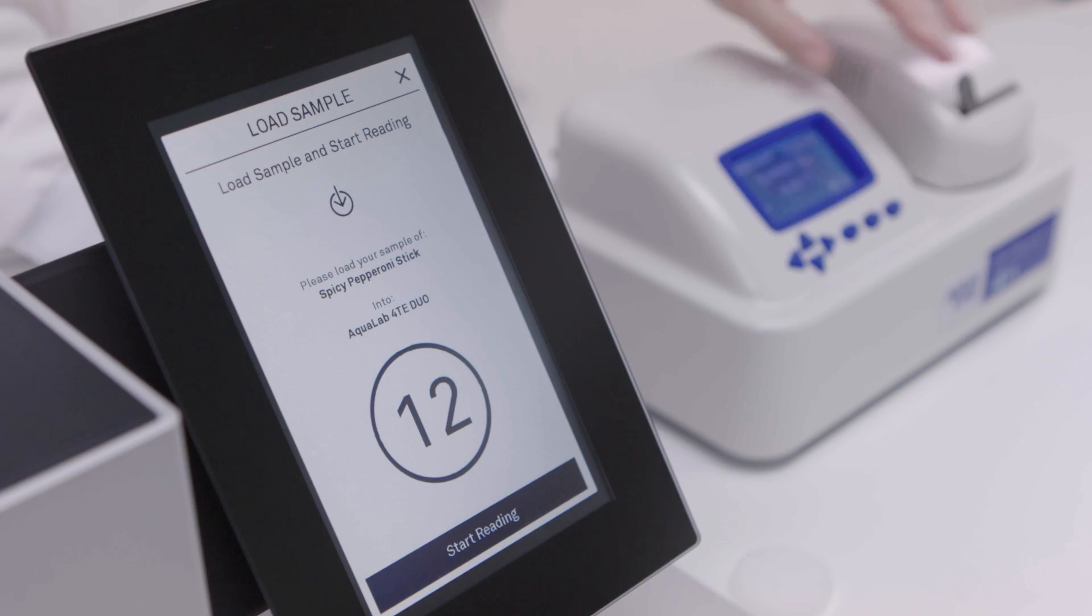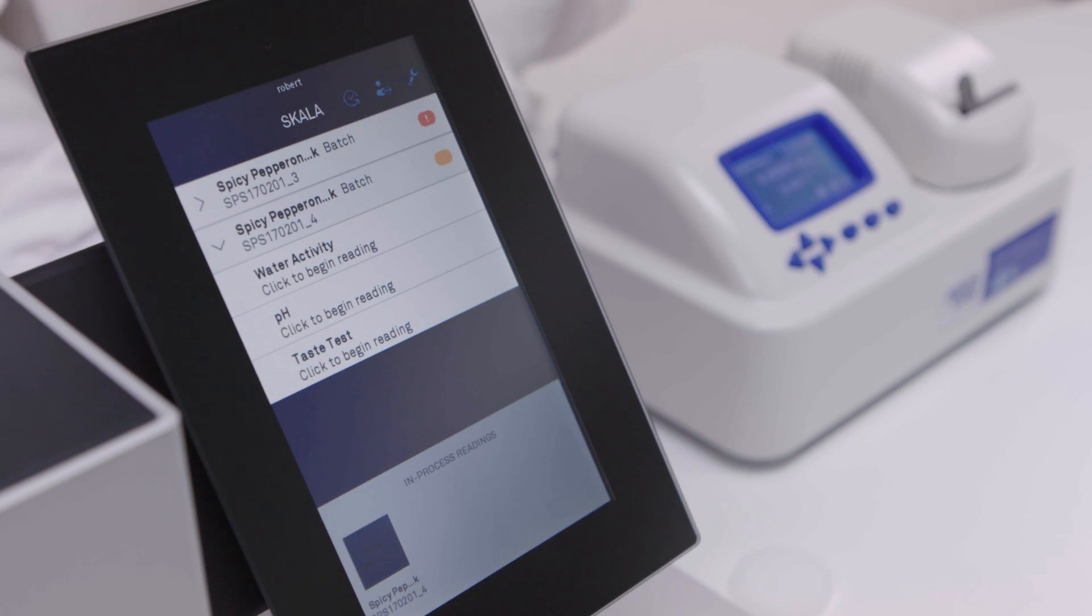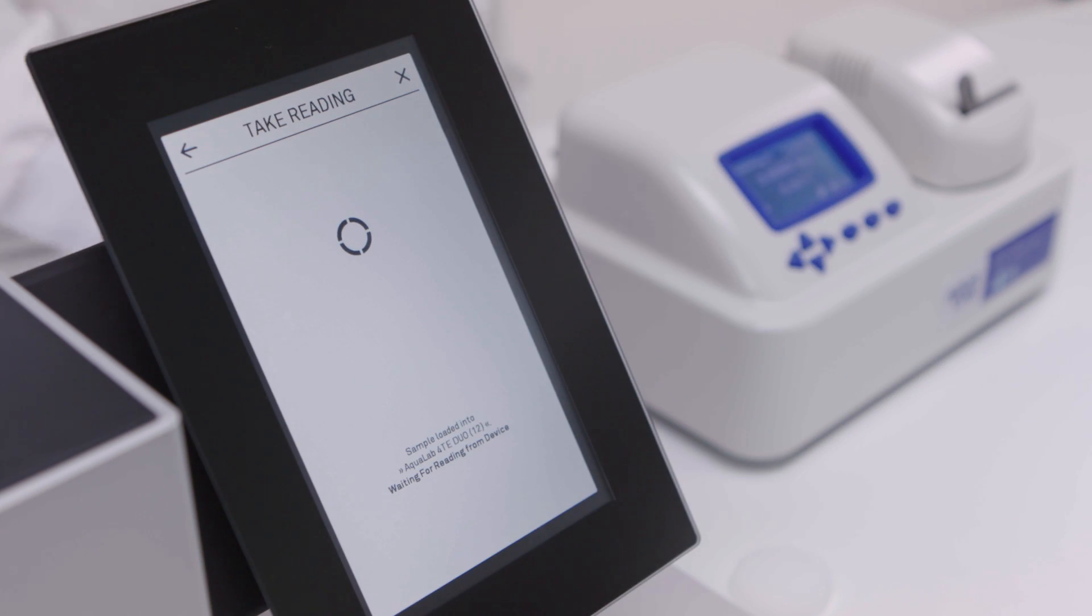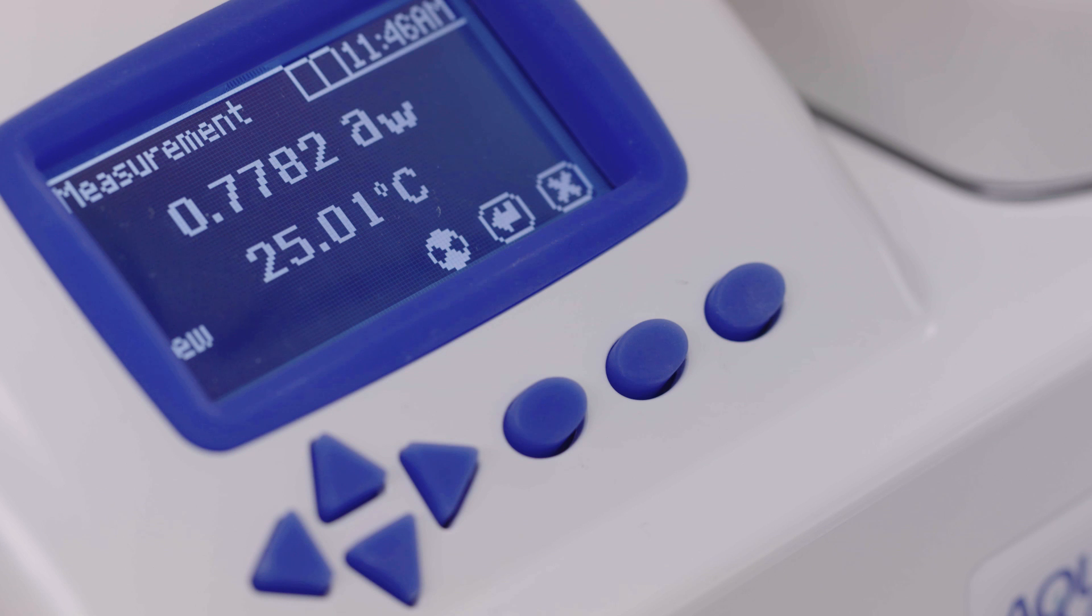In one or two minutes, a preliminary number will show. The spinning wheel at the bottom of the screen indicates the Aqualab is still checking to see if the sample has stabilized. If you are recording readings manually, you can listen for the beep that shows that the instrument is done. Your final water activity reading will show on the screen.